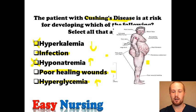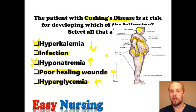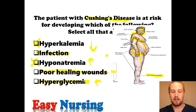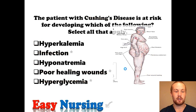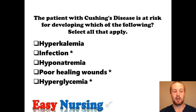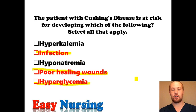Looking at this diagram to review: here you can see a Cushing's patient, typical with the very wide abdomen, thin extremities, holding on to fluids and fat, so you have a moon face and a hump. Poor wound healing is going to be one of the issues they'll have to deal with. So for this problem, selecting all that apply, the correct answers are infections, poor wound healing, and hyperglycemia in the Cushing's patient.